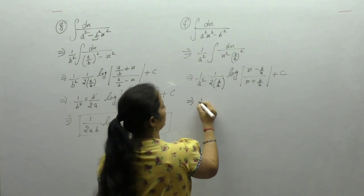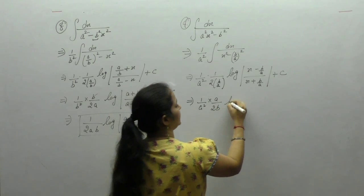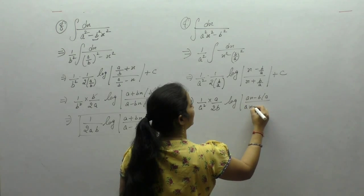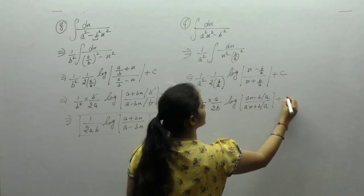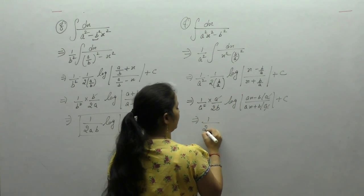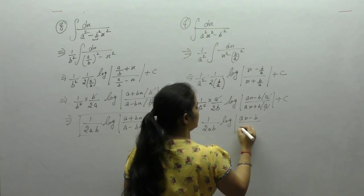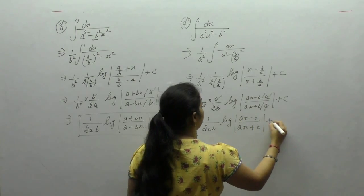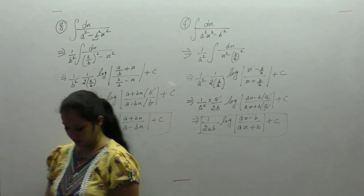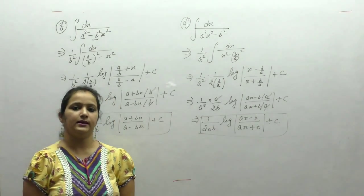1 upon (x plus a), 1 upon a square. The result is: a upon 2b times log of (ax minus b) upon (ax plus b) plus c. This gives us 1 upon 2ab times log of (ax minus b) upon (ax plus b) plus c.